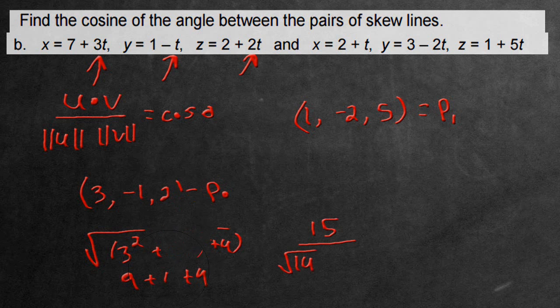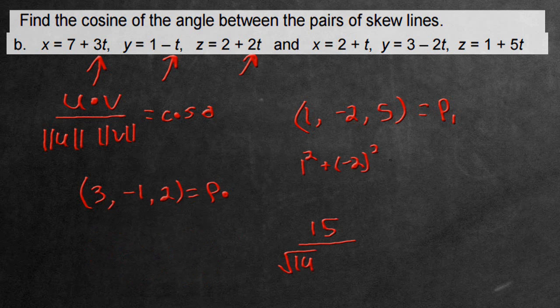And now let's find the magnitude of the last vector. So we have a 1. Let's do this over here. 1 plus negative 2 squared and plus 5 squared, all this being square rooted. We have a 1 plus 4 plus 25. That's going to be square root 30 as an end result.